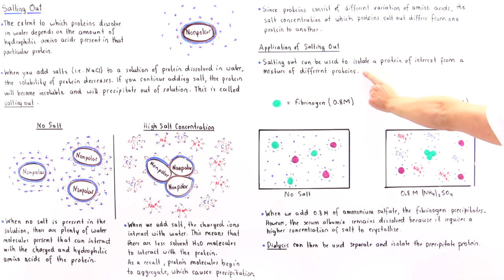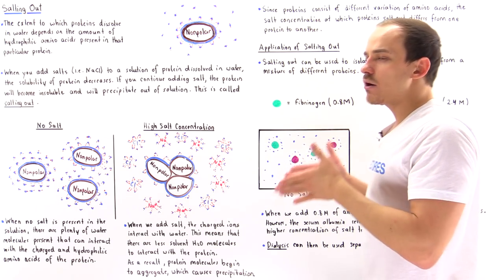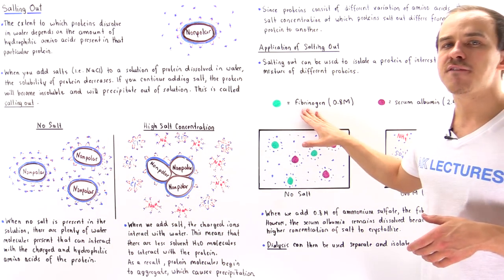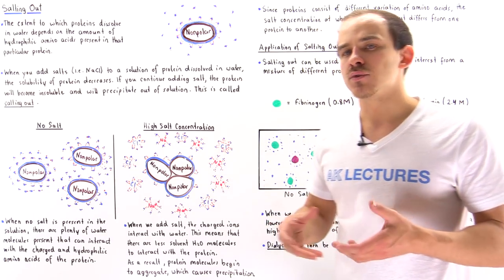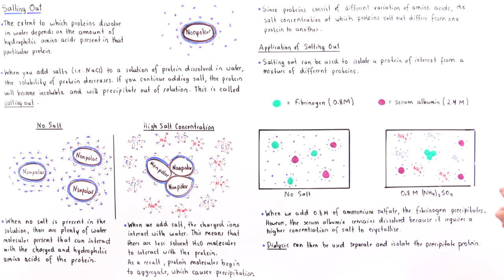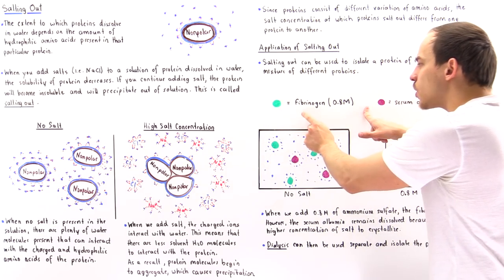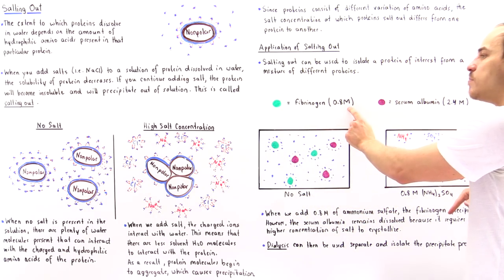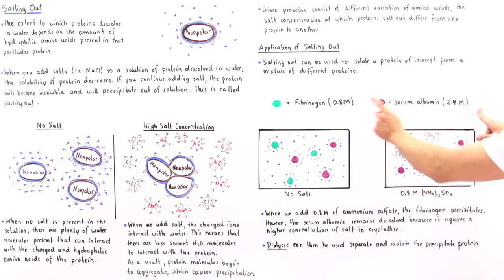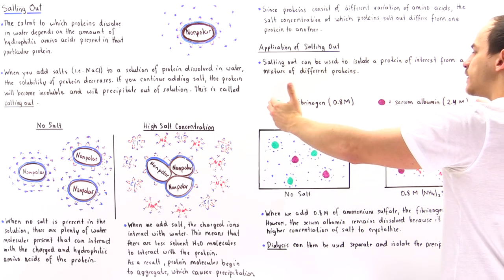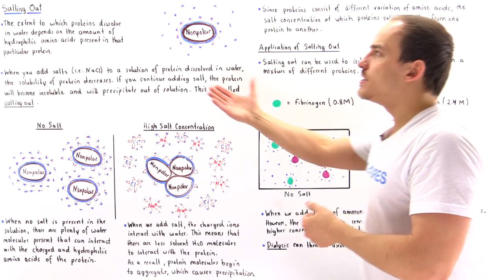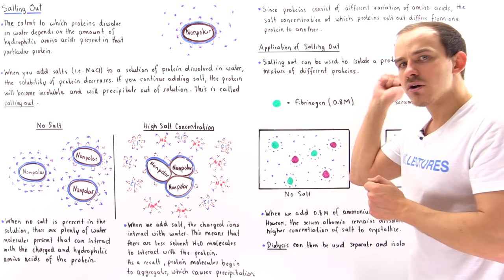Salting out can be used to isolate a protein of interest from a mixture of different proteins. In our example, we have a mixture of two proteins: fibrinogen, a blood clotting protein, and serum albumin, the protein that carries lipids such as fatty acids and cholesterol inside our blood plasma. Fibrinogen requires a concentration of 0.8 molar of ammonium sulfate to precipitate, while serum albumin requires three times this concentration — 2.4 molar. Because of this drastic difference in solubilities and salt concentration values, we can apply salting out to isolate fibrinogen from the mixture.